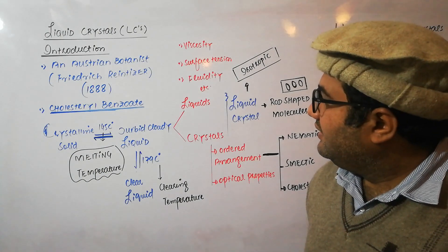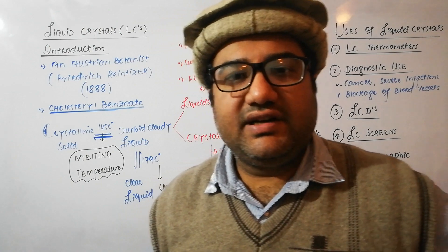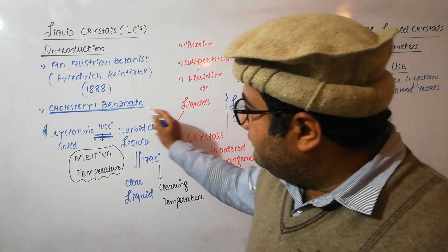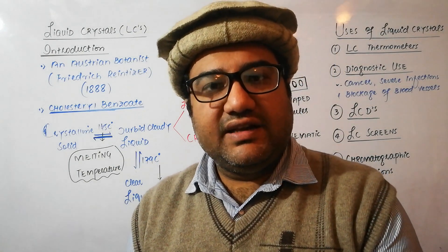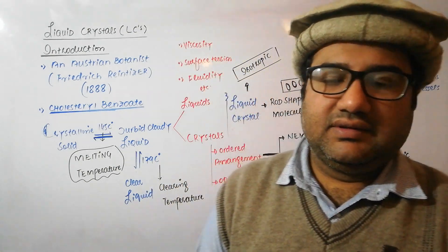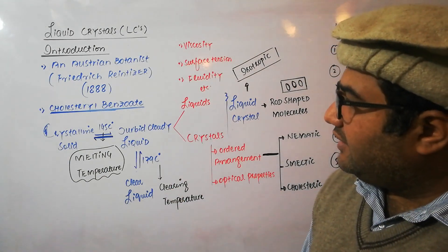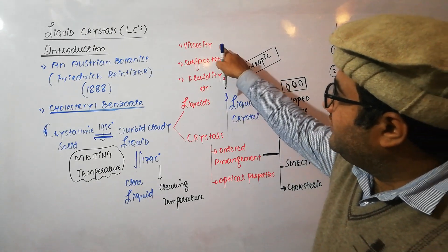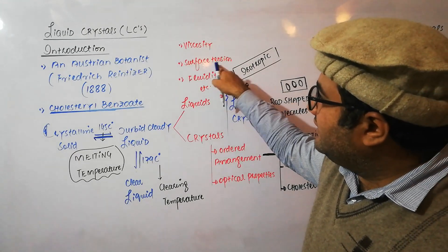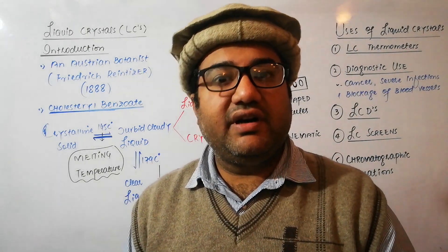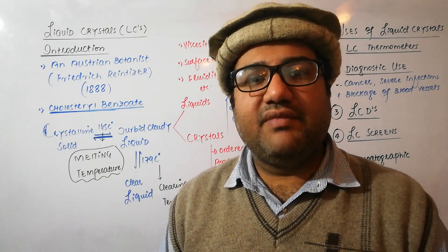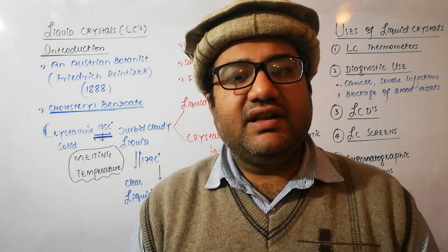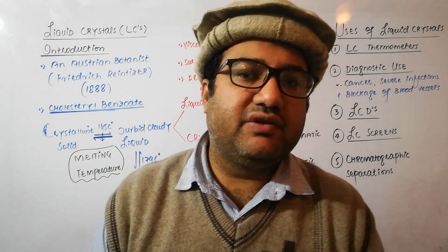He found surprisingly that this intermediate state — between the crystalline solid and the clear liquid — has some properties of liquids. It has viscosity just like liquids, it has surface tension just like liquids, and it can flow, meaning it has fluidity just like liquids. These are three properties that match with liquids. If you do not have any idea of viscosity or surface tension, please do watch my lectures on viscosity and surface tension of liquids.